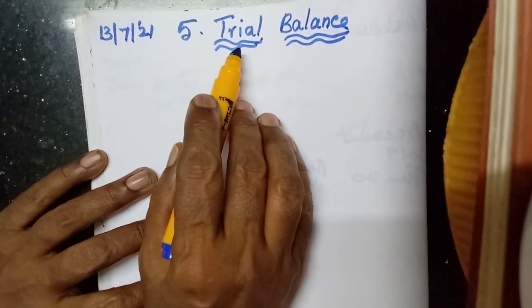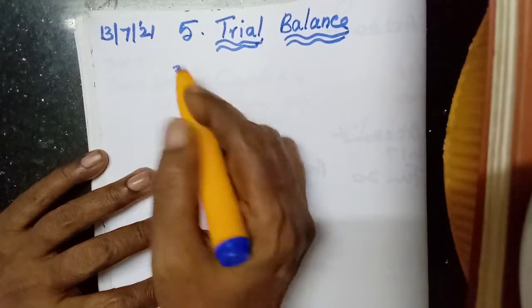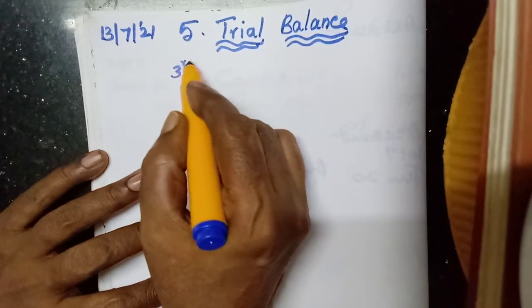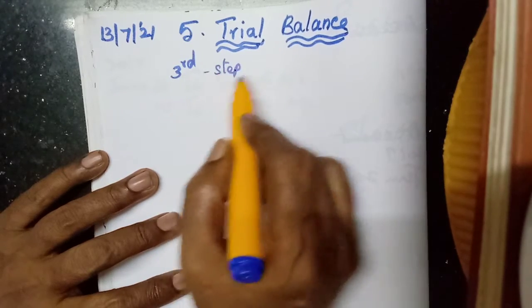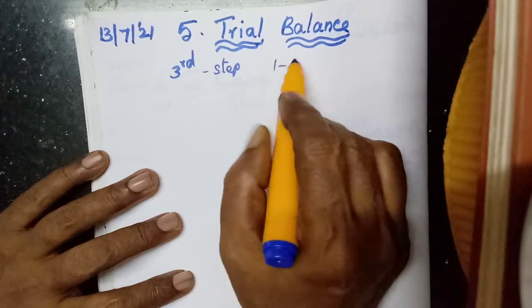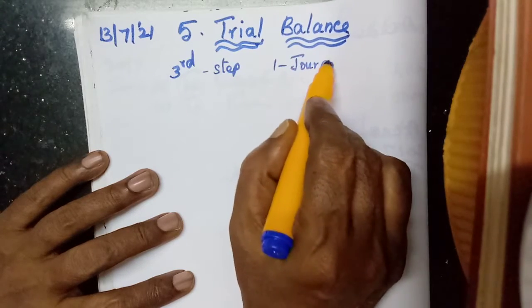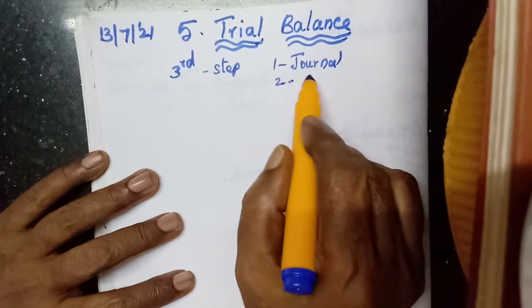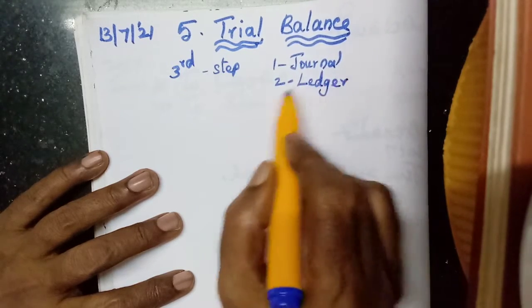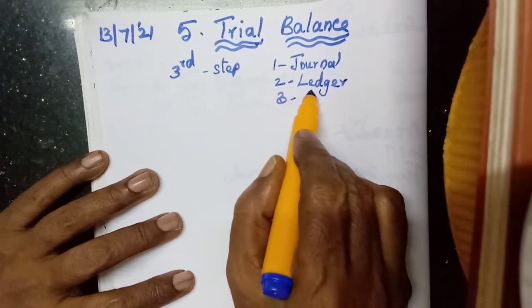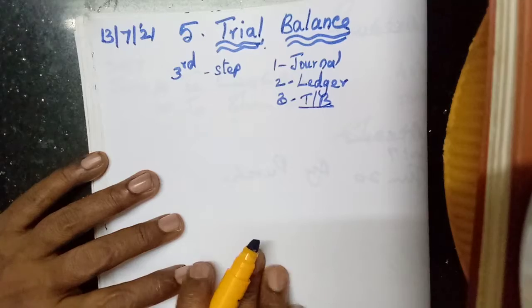The fifth lesson I am going to teach you is the third step in the process of accounting. The first step is preparing journal entries. The second step is preparing ledger accounts. So now the third one is preparing trial balance.